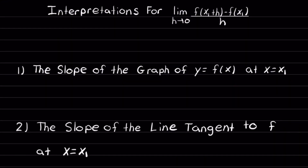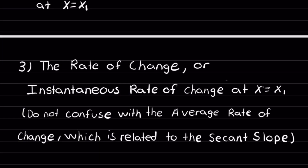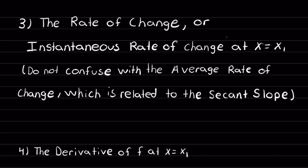Now it's a good idea to understand the interpretations of the limit as h goes to 0 of f of x1 plus h minus f of x1, over h. You may be asked to find the slope of the graph of y equal f of x at x equal x1, or to find the slope of the line tangent to f at x equal x1, or to find the instantaneous rate of change at x equal x1. You can use this formula to solve problems asked any of these ways.